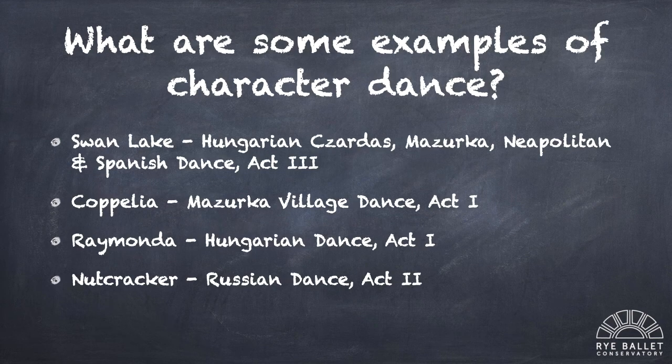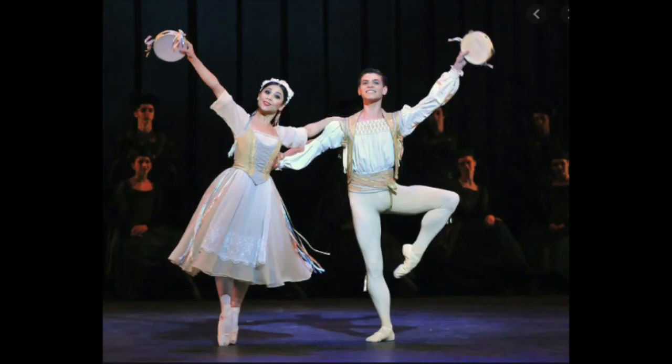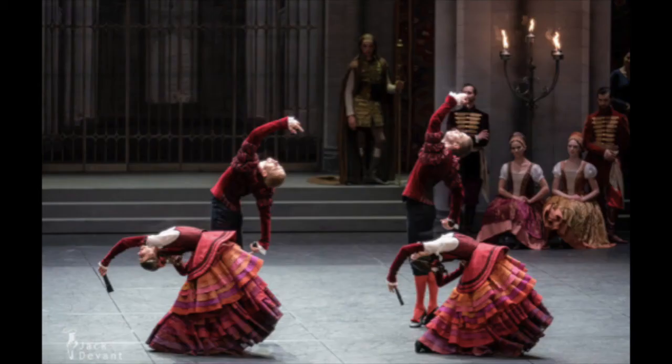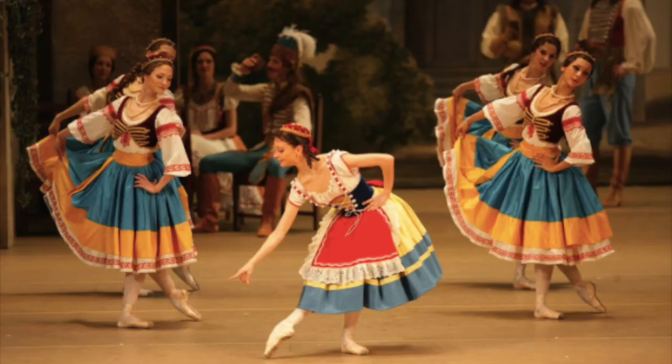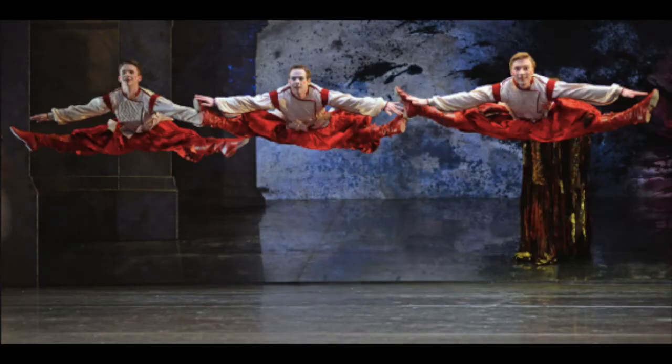What are some examples of character dance that you can think of? In Swan Lake, you have many: the Hungarian Czardas, the Mazurka, the Neapolitan dance, and the Spanish dance — all in Act 3. In Coppelia, there's the Mazurka Village dance in Act 1. In Raymonda, you have the Hungarian dance, also in Act 1. And in the Nutcracker, you have the Russian dance in Act 2.